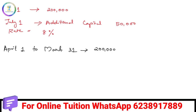This is the interest calculation for the year: Rs. 2,00,000 × 8/100 = Rs. 16,000 interest for the year. Then in July the additional capital is introduced.